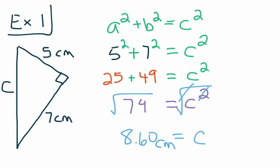That makes sense because we said the hypotenuse must be the longest side of a right triangle. 8.60 is greater than 7 and greater than 5. Also, the length of the hypotenuse cannot be greater than the sum of the two legs — 5 plus 7 is 12 — so the hypotenuse must be less than 12 but greater than 7. 8.60 fits that range, so it's a correct answer. That's an example where we find the length of the hypotenuse. Next, let's look at an example where we find the length of a leg.